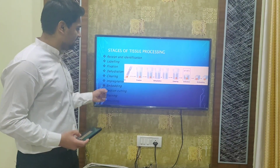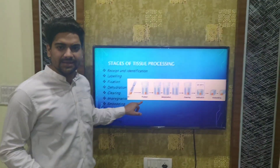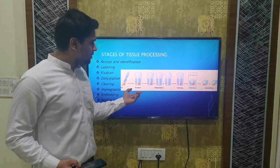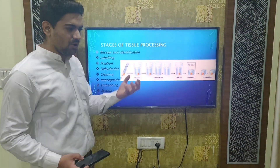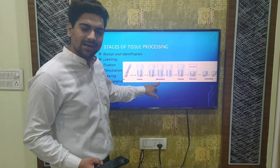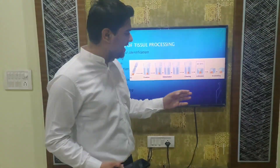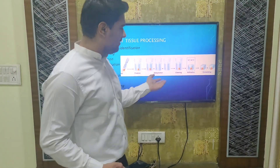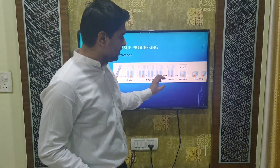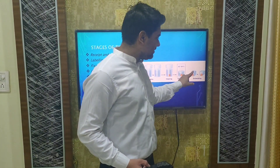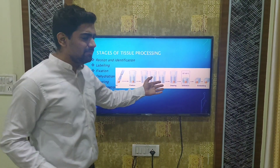Now let's look at tissue processing. We have to fix the tissue — we fix it in formalin liquid so that it can be preserved. After fixation, dehydration takes place to remove water present in the tissue. After dehydration, clearing is done. After clearing, wax infiltration occurs where wax gets into the tissue, and finally embedding is performed.